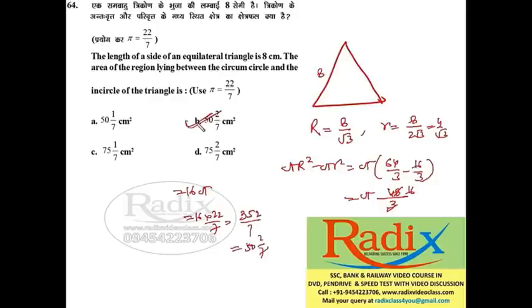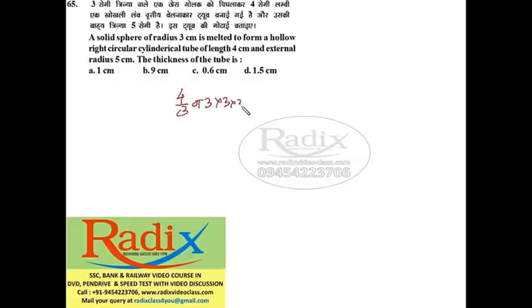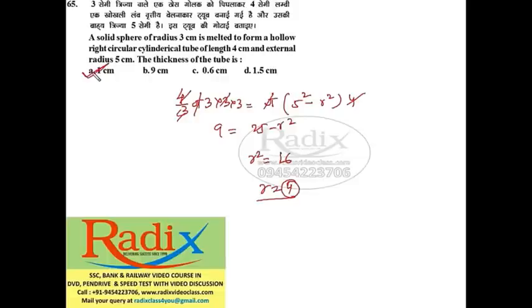Question 65: A solid sphere of radius 3 cm is melted to form a hollow right circular cylinder tube of length 4 cm and external radius 5. Find the thickness. Volume of sphere = (4/3)π·27 = π(25 − r²)·4. Pi and other terms cancel; 9 = 25 − r², so r² = 16, r = 4. Thickness = external radius − internal radius = 5 − 4 = 1 cm. Answer is option A.